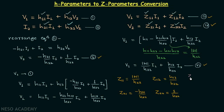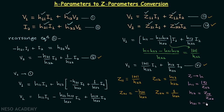Now if you want to perform the reverse conversion — Z parameters to H parameters — try to derive the H-form equations from the Z equations. You will find: H11 equals det(Z) divided by Z22, H12 equals Z12 divided by Z22, H21 equals minus Z21 divided by Z22, and H22 equals 1 over Z22.